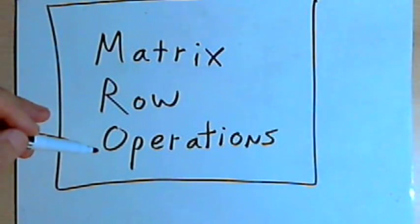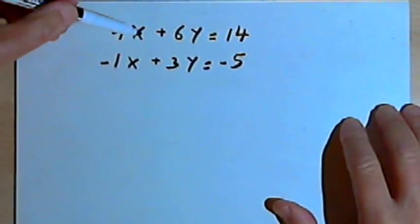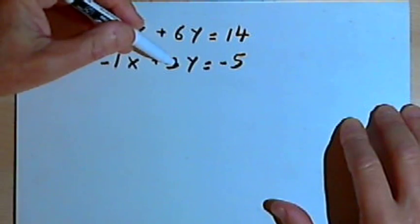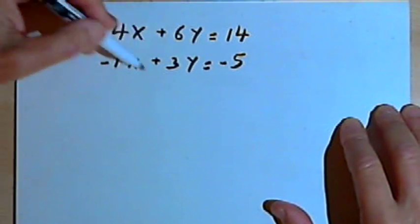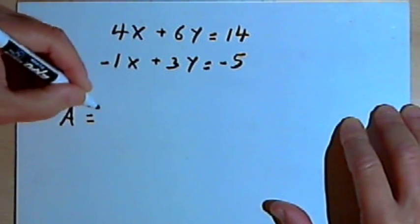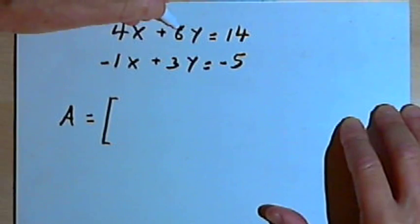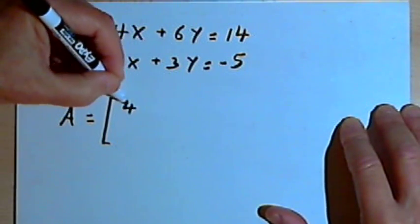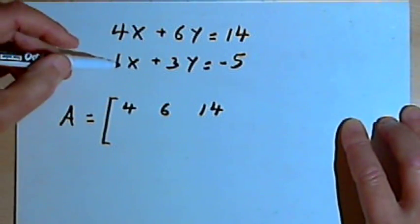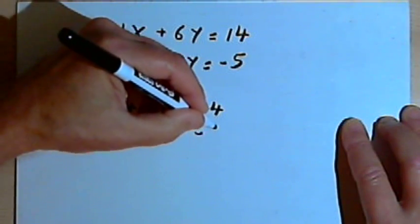You've probably been doing row operations for a while without realizing it. I've got a system of equations: 4x plus 6y equals 14, and negative 1x plus 3y equals negative 5. I'm going to take the information in this system of equations and make a matrix, matrix A. The first row will be the coefficients from equation one plus the constant: 4, 6, and 14. The second row will be the same information from the second equation: negative 1, 3, and negative 5.